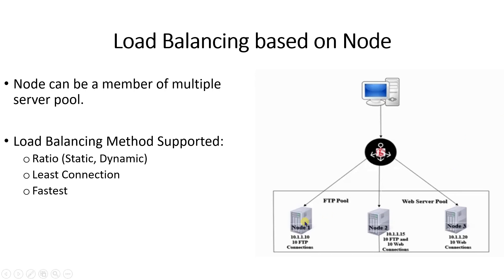As you can see, node one has received 10 FTP connections and node three has received 10 web connections. But node two has received 10 FTP connections and 10 web connections, so in total node two has received 20 connections. This is what it means — the total connections forwarded to the server device, whether from one server pool or from multiple server pools.